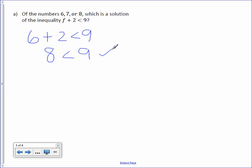Let's see if any other numbers work. 7 plus 2 is less than 9. 7 plus 2 is 9. Is 9 less than 9? It's not. 9 is equal to 9, but it is not less than 9. So we can put a slash through the inequality symbol.